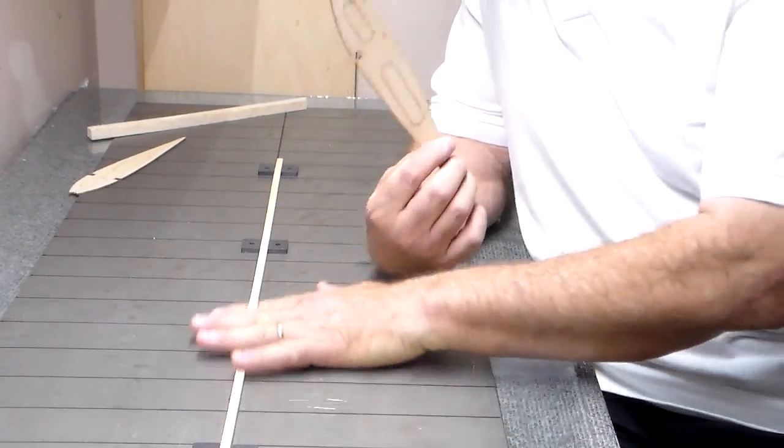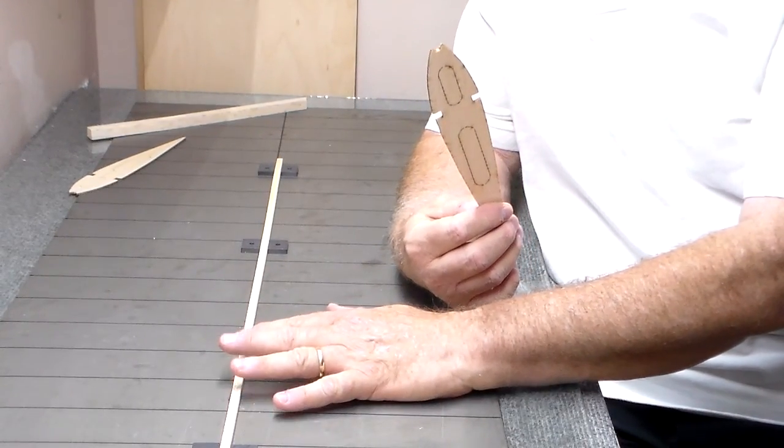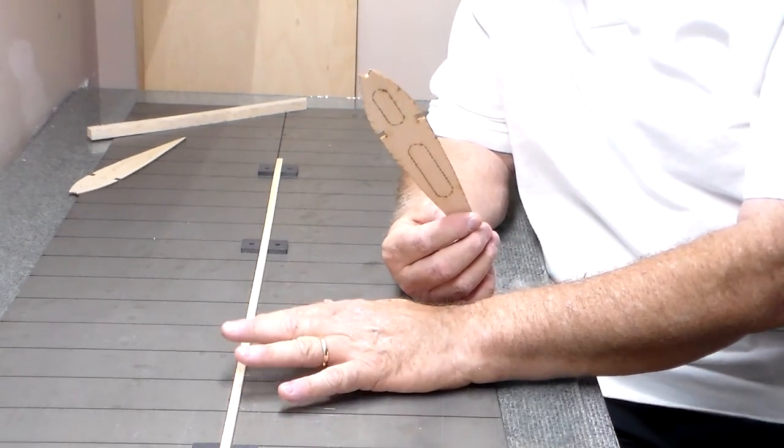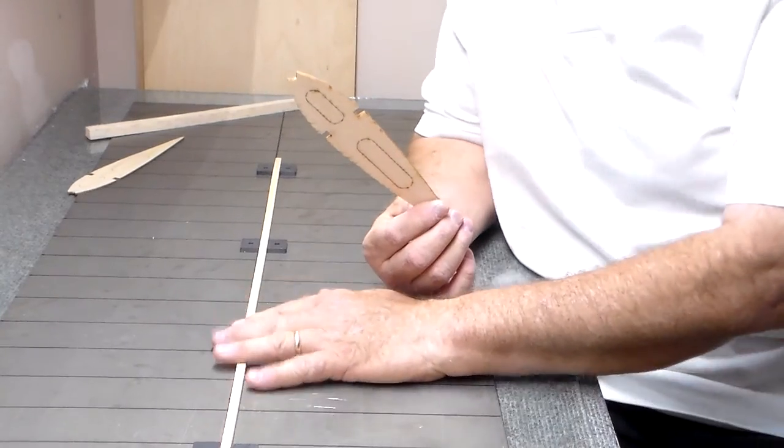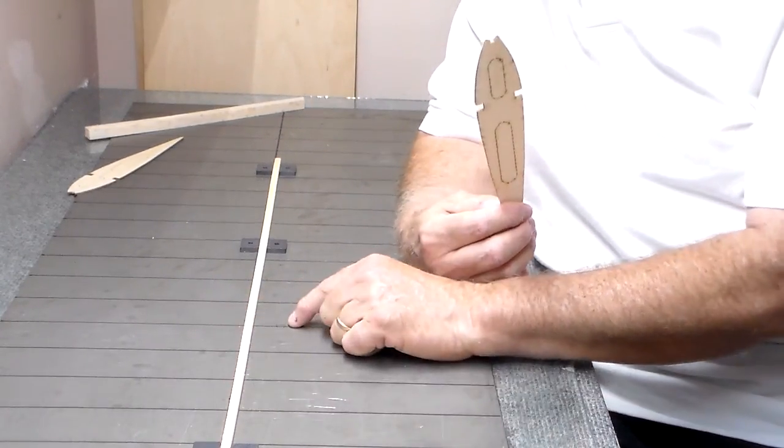This spar right here represents the bottom spar. It's not by any means as long, it's just 36 inches long. Most wings are longer than that, so I'm just using this. Just pretend this is your spar that you have spliced together for the total length of the wing.